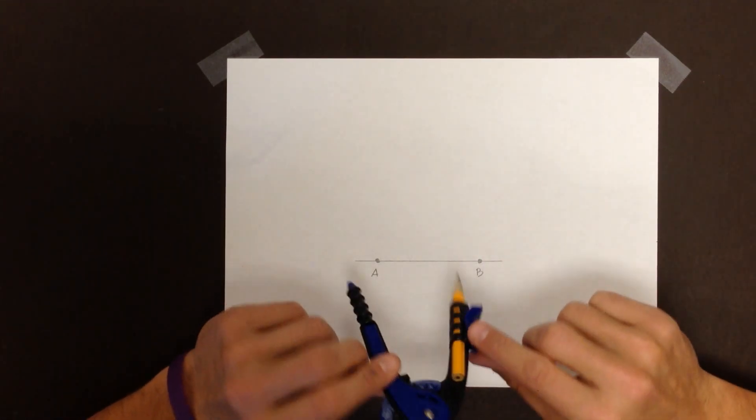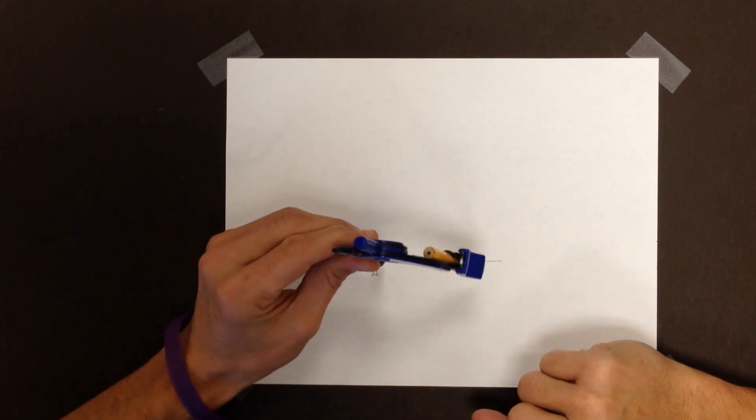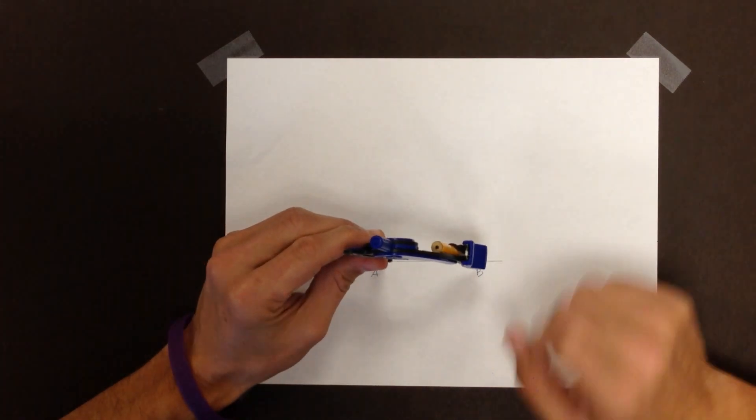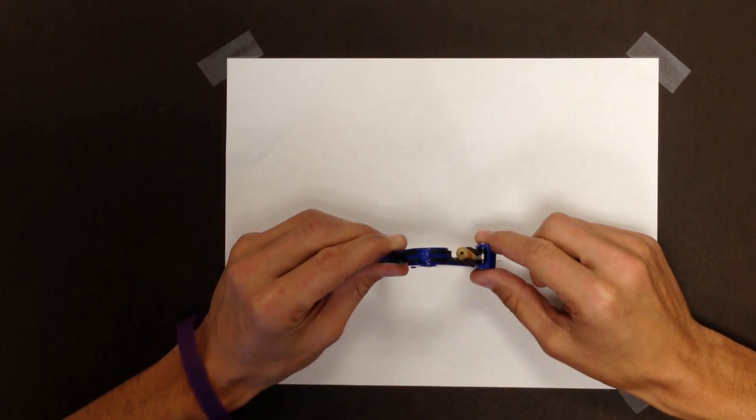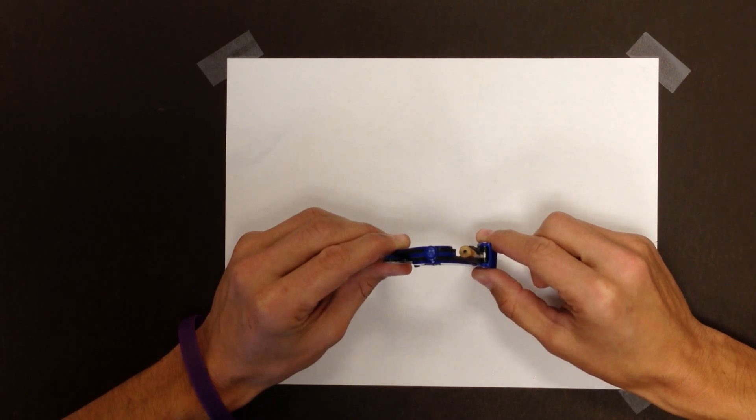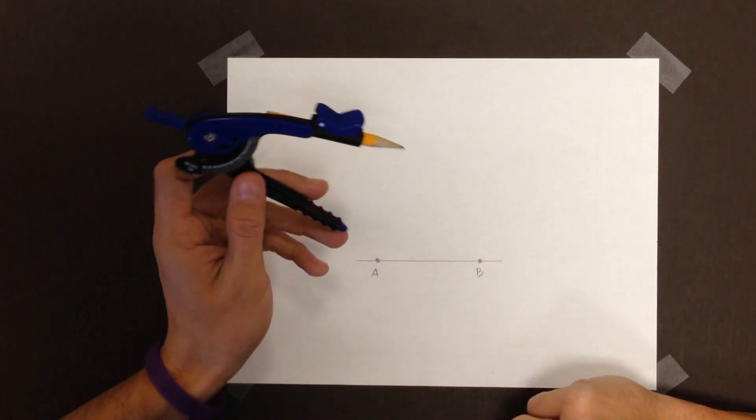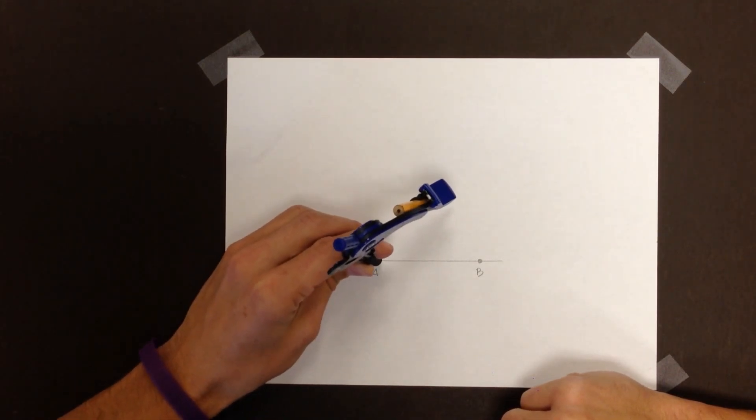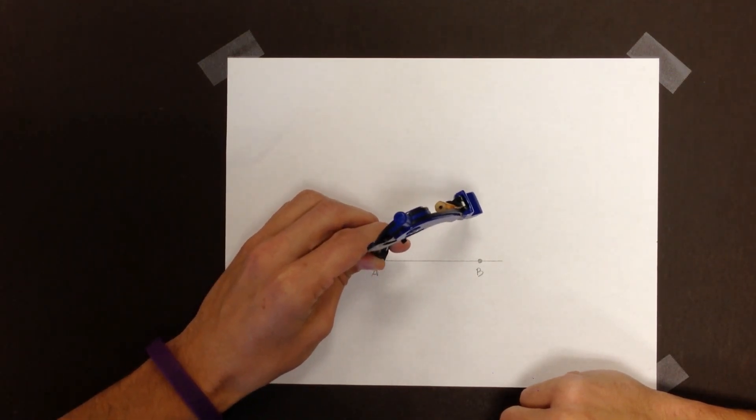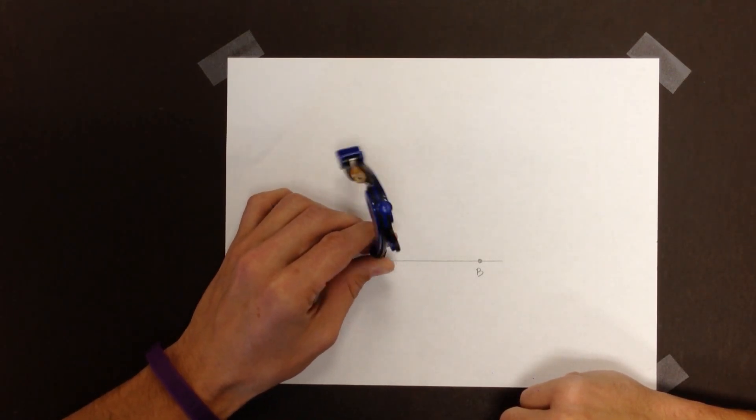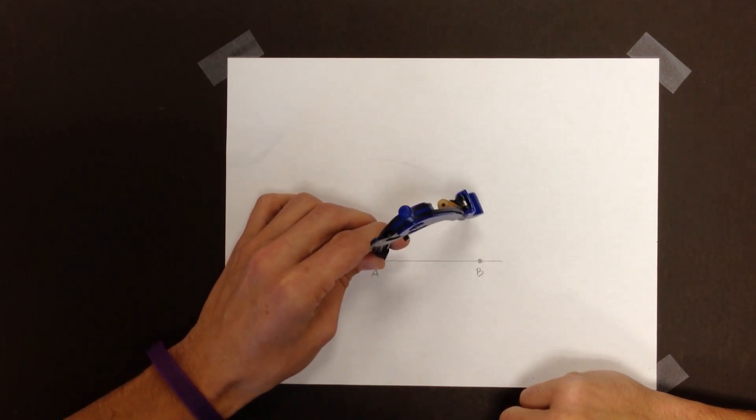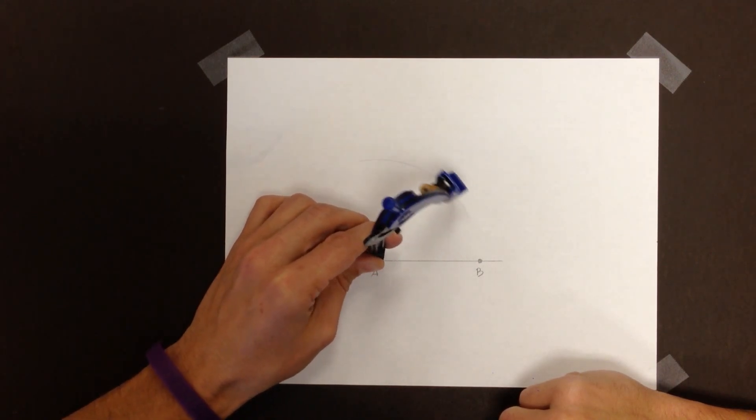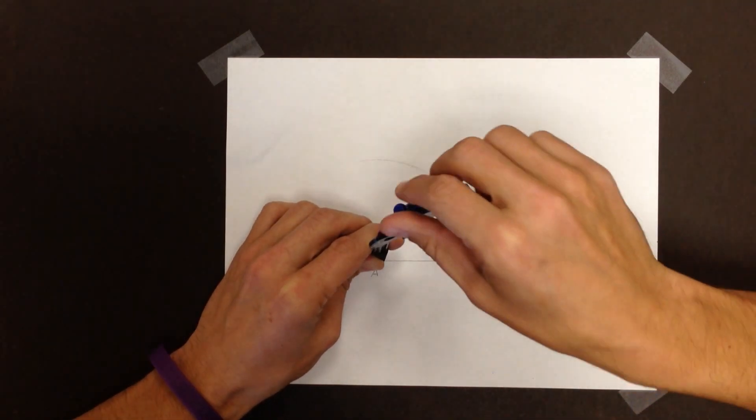So what I'm going to do is extend my compass, putting one end on A and one end on B, because I know that's what the lengths of my rhombus are going to be. That's how big my side length is going to be. I'm going to put the non-pointy end on A and just draw an arc. It doesn't particularly matter how big it is, but I'm going to make it a little dark.